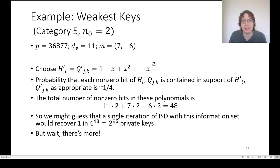Now we will examine an example using these principles. Here we're going to use the simplest possible form of the information set. We're just going to have H prime and Q prime be polynomials which have all the nonzero coefficients up to degree p over 4 and 0 for the rest. The products will have the proper weight so that we can choose an information set. The probability that each nonzero bit of H or Q is contained in the support of H prime and Q prime is about 1 fourth.